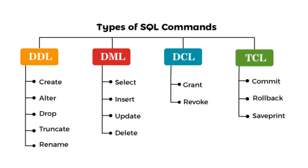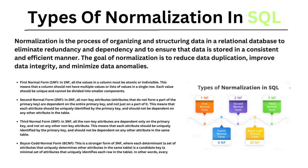The next question is: what is normalization and what are the different types? In general terms, normalization means bringing something to a normal condition or state. In the context of databases, normalization is the process of organizing and structuring data in a relational database to eliminate redundancy and dependency, and to ensure data is stored in a consistent and efficient manner. The goal of normalization is to reduce data duplication, improve data integrity, and minimize data anomalies.